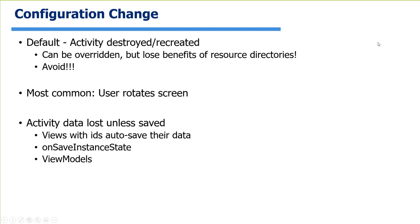When a configuration change happens — the most common being rotating the device — it's going to destroy the activity instance and recreate it. This is generally a good idea to allow because it can automatically pick which resources it needs. If the user changes language, it'll destroy and recreate the activity, loading text resources from the closest matching language. Any data defined in the activity will be lost unless you explicitly saved it or put it into a ViewModel. A ViewModel is an in-memory object that holds data for an activity and stays alive throughout configuration changes.